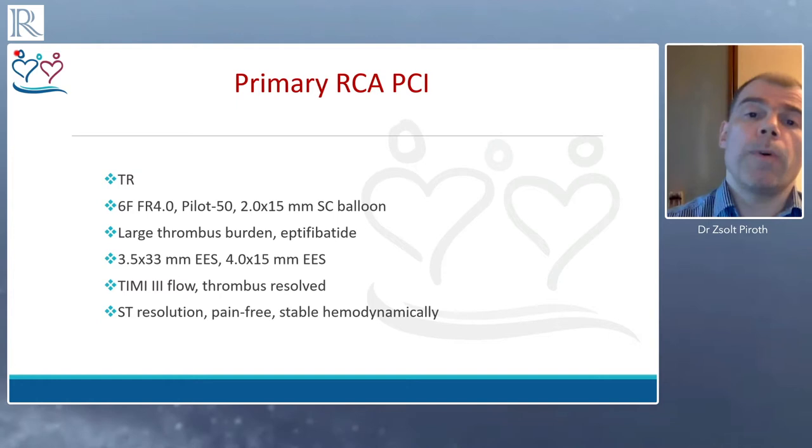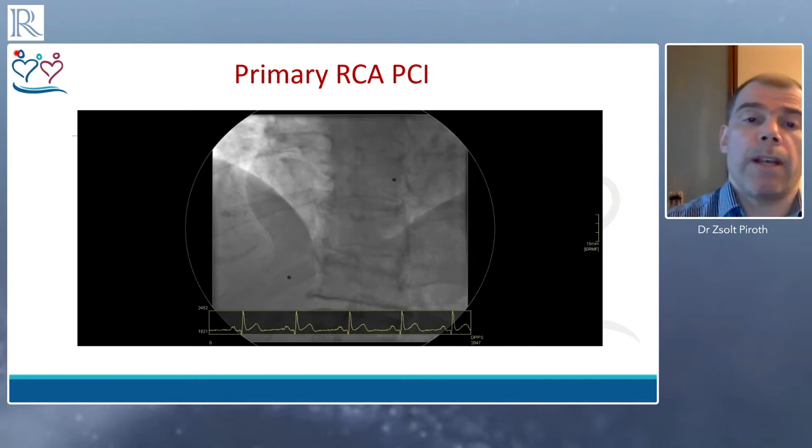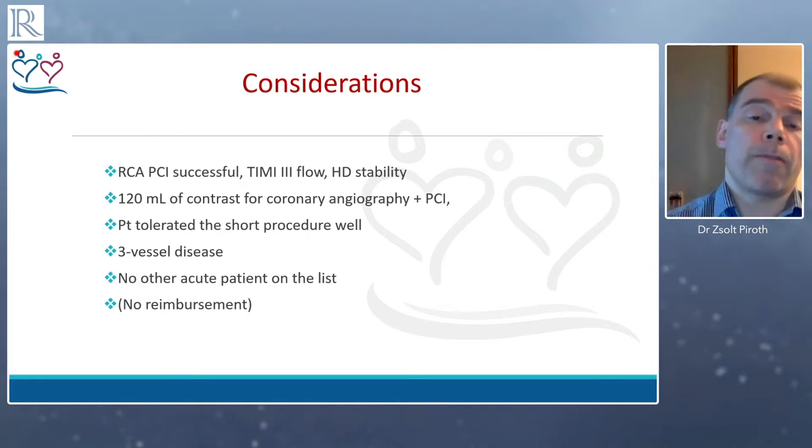She then had two long drug-eluting stents placed: a 3.5 by 33 mm and a 4.0 by 15 mm everolimus-eluting stent. We were able to establish TIMI-3 flow when the thrombus resolved, and also noted complete ST-segment resolution. She became pain-free and was hemodynamically stable. This shows the results of the right coronary PCI — good flow in all side branches and resolution of the ST-segment elevation.